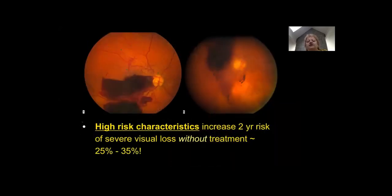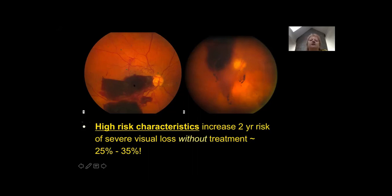High-risk characteristics increase the two-year risk of severe visual loss without treatment by 25% to 35%. In the patient with sub-vitreous sub-hyaloid hemorrhage versus vitreous hemorrhage, both are characteristics which increase the chance of severe visual loss. For the sub-hyaloid hemorrhage that's sequestered, vitrectomy would be required — the patient's vision is in the range of counting fingers and this type of hemorrhage takes a long time to resolve spontaneously. However, for the minor vitreous hemorrhage on your right, we would typically wait a month or so before doing vitrectomy because at least 70% of the time these so-called minor vitreous hemorrhages will clear spontaneously to enable laser therapy.